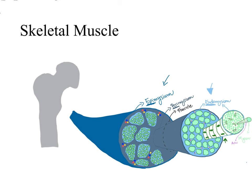When a skeletal muscle attaches to a bone, the epimysium, perimysium, and endomysium all merge and become this connective tissue tube that we call a tendon. This connective tissue — the fusion of the epimysium, perimysium, and endomysium from the muscle — fuses with the periosteum of the bone. So we have the connective tissue of the skeletal muscle merging and fusing with the connective tissue surrounding the bone. This arrangement is essential for the function of the musculoskeletal system.